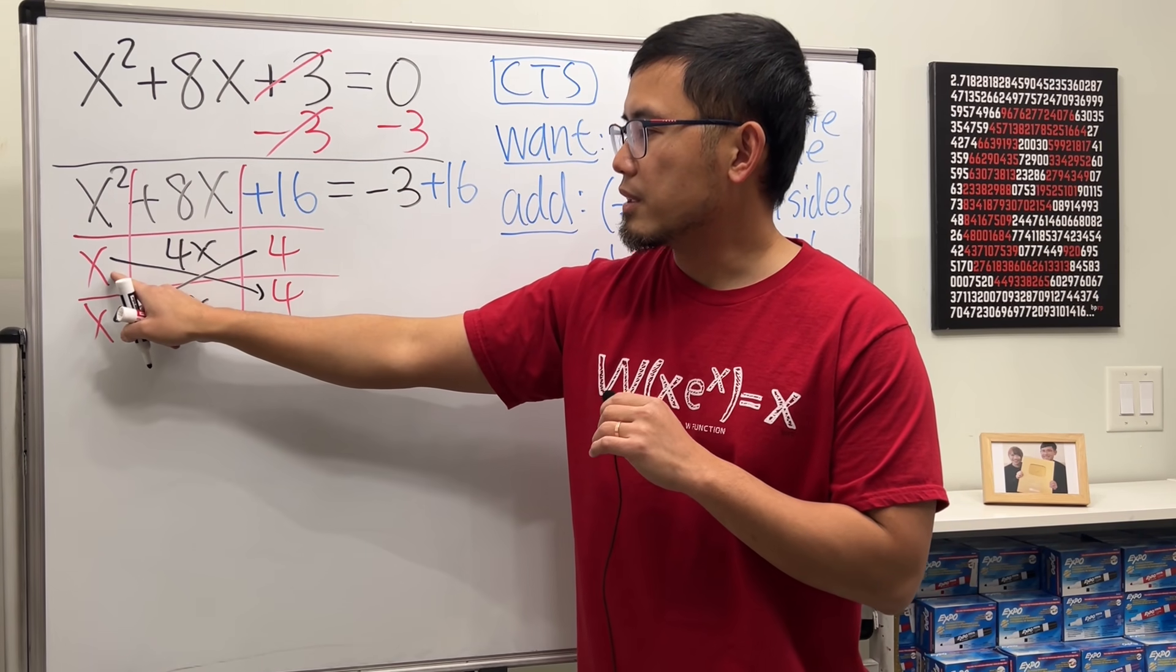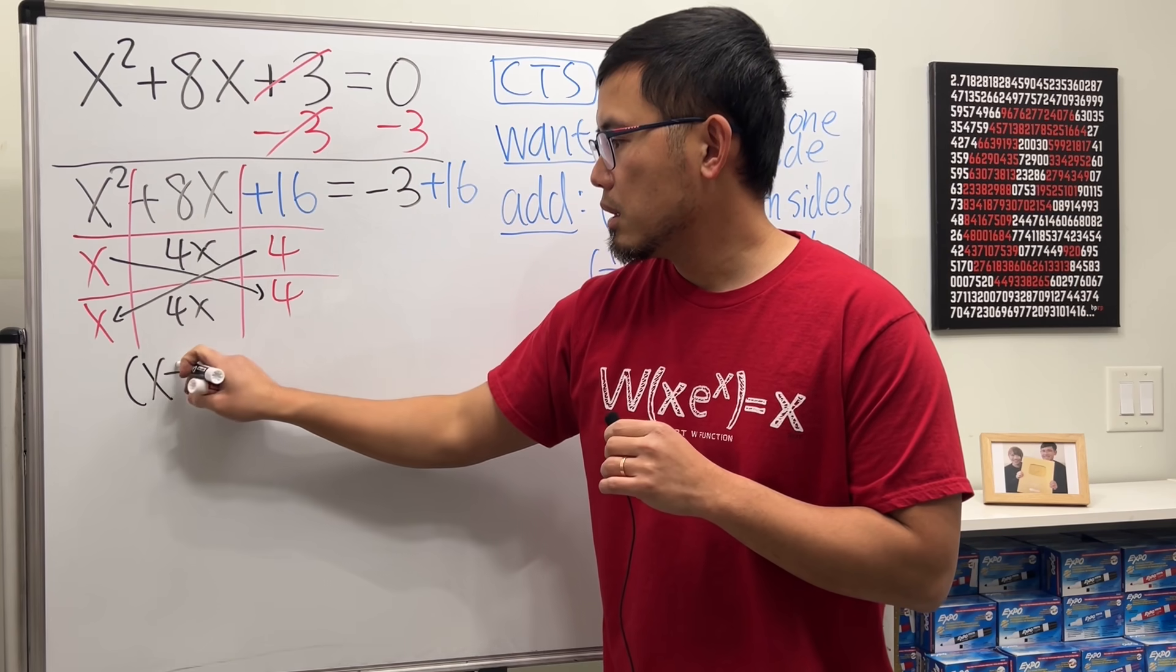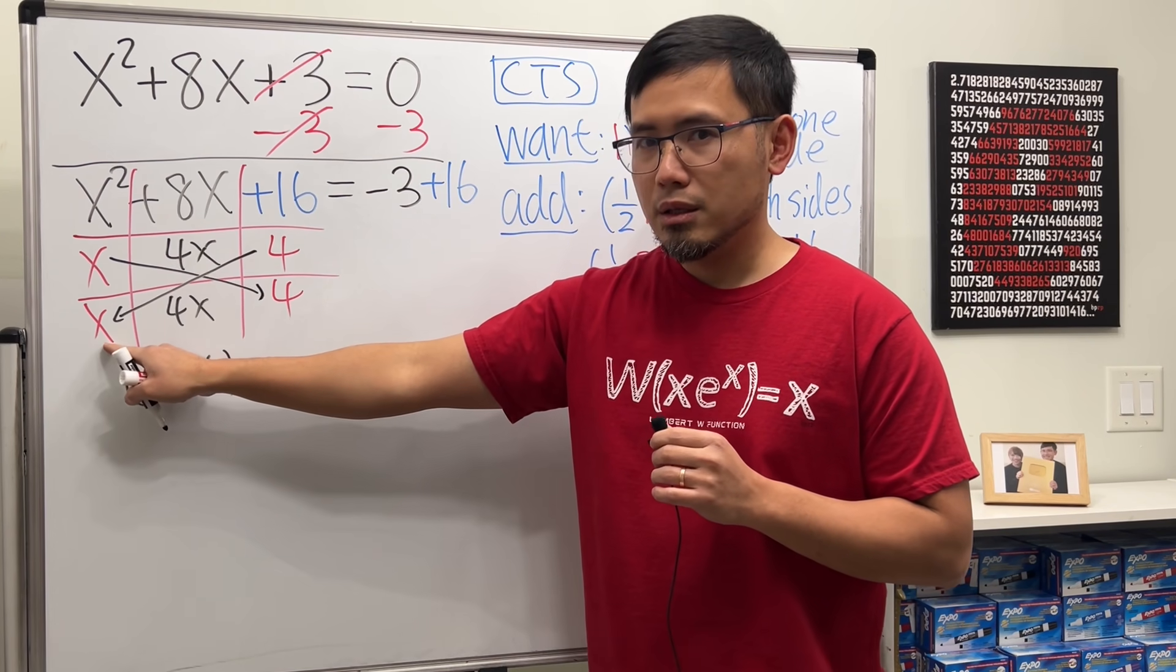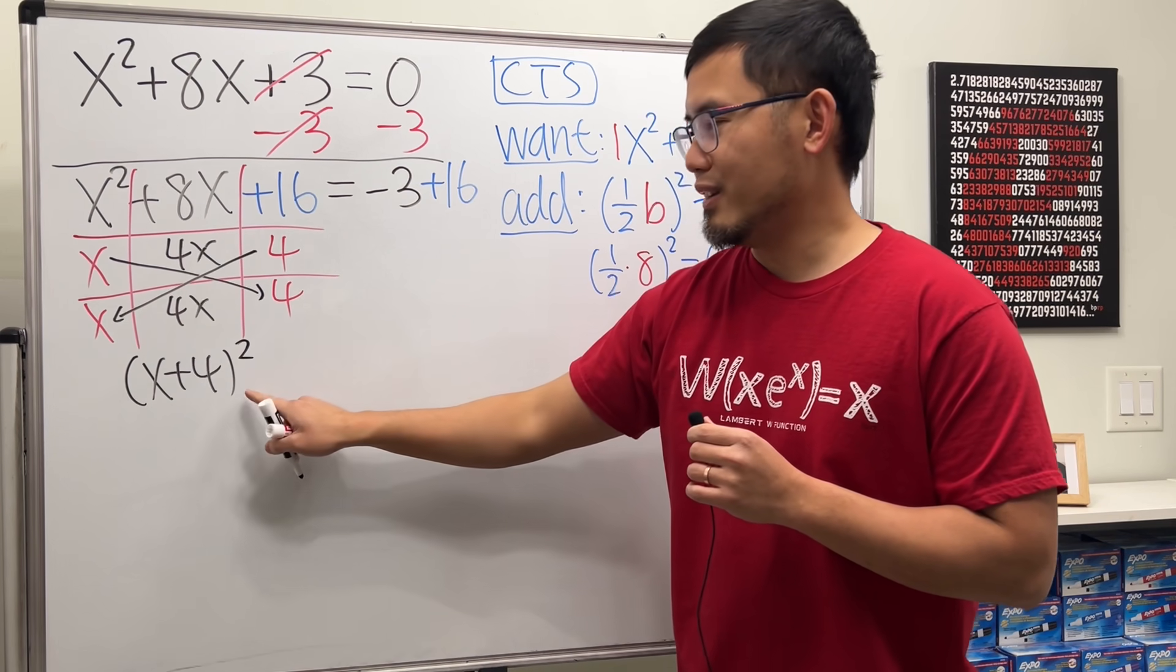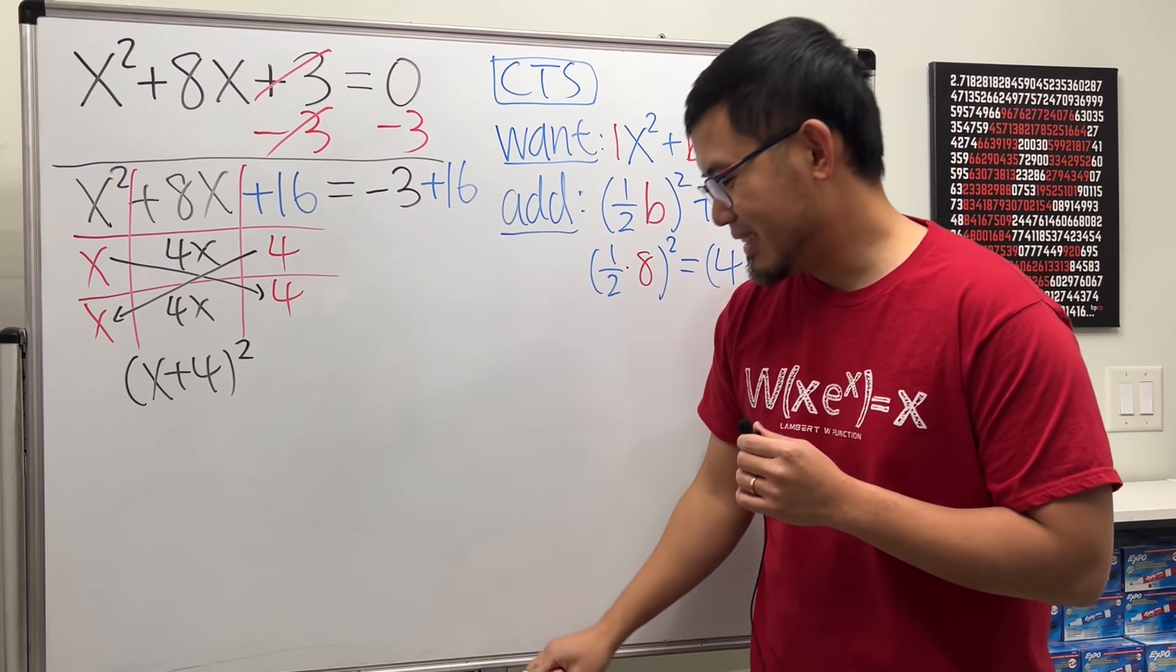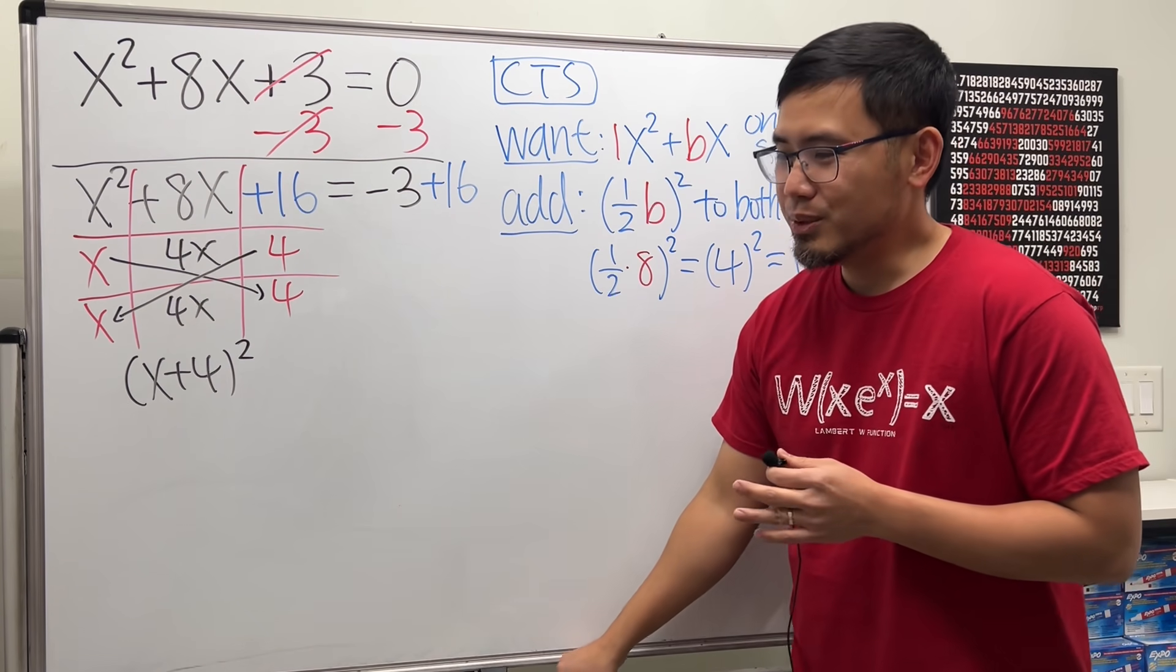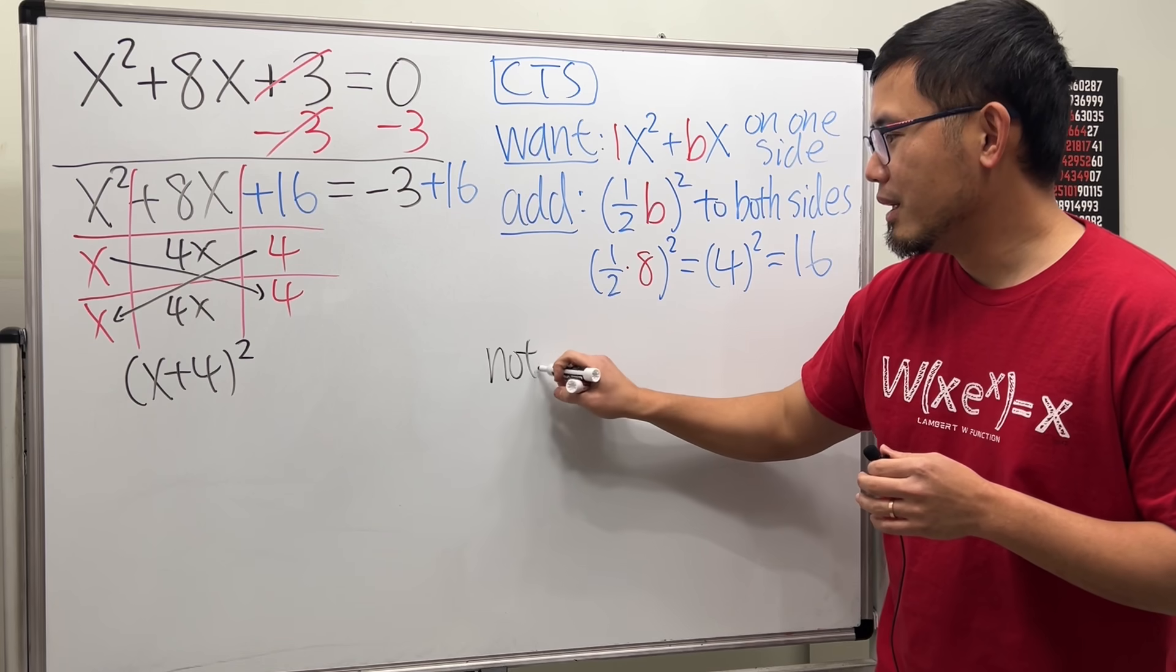And we can just say the factoring is x plus 4, and another one x plus 4, so we can write it as (x + 4)². So you can just work it out like this. All right, but if you would like to just see the geometry here I have that for you as well.